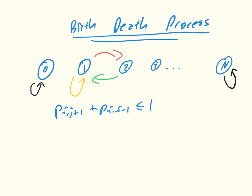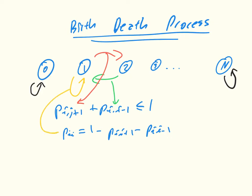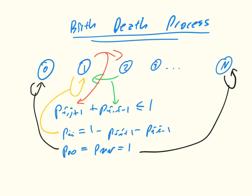And so that's this one, and that's this one. Then we also have, because there's a bit of room in our probability, that P(i,i) — the probability of staying in the same place — is 1 minus P(i, i+1) minus P(i, i-1). And then we've also got that P(0,0) equals 1 and P(n,n) equals 1.